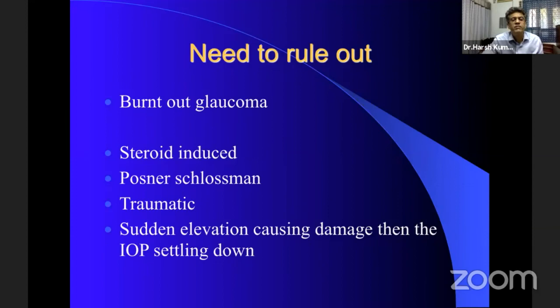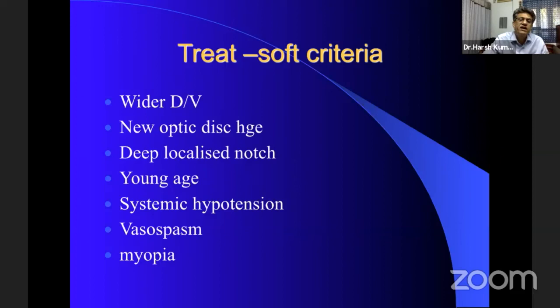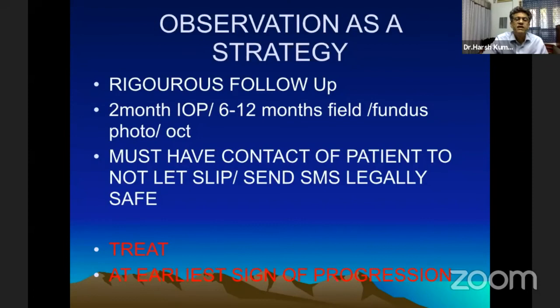You have to be sure it is not a steroid-induced glaucoma that has resolved. Posner-Schlossman syndrome, traumatic or sudden IOP elevation — all these cases will settle down and need not be treated. Only treat if they are threatening fixation, IOP is in the higher range, there is a disc hemorrhage, wider diurnal variation, family history, younger age, vasospasm, or myopia. Observation has to be rigorous: two-monthly IOP must be done, six to twelve-monthly fields, fundus photos, and OCT must be performed. One must have a contact number for the patient and send reminders so you are legally safe, and treat at the earliest sign of progression.